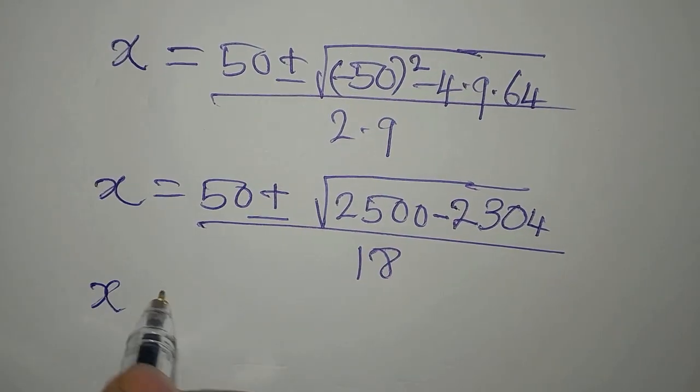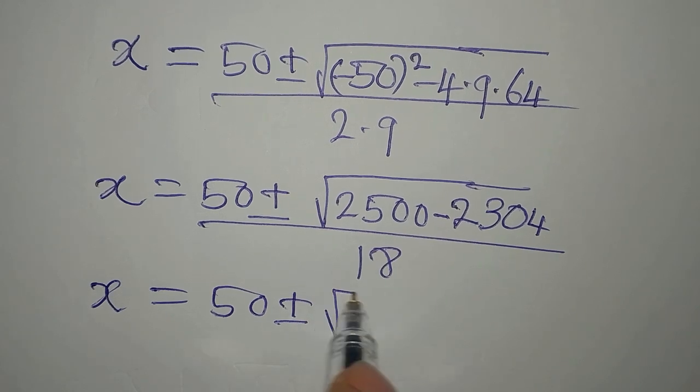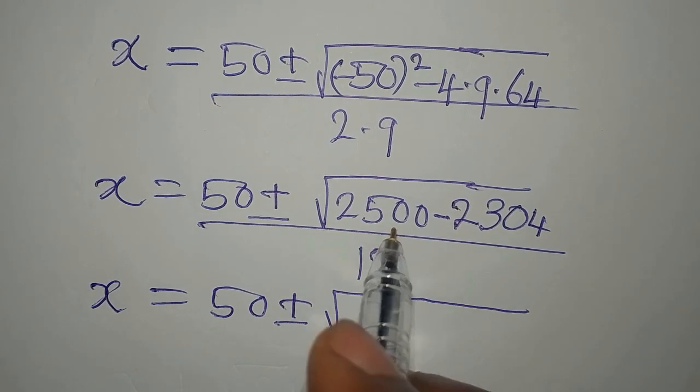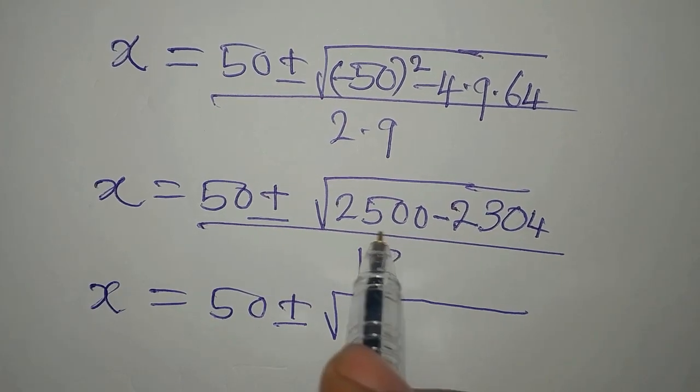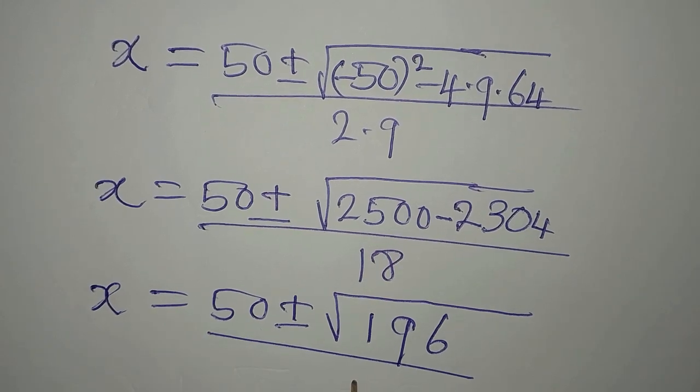Now our x will be 50 plus or minus square root of, we're going to subtract this before finding the square root. 2,500 minus 2,304 gives us 196, divided by 18.